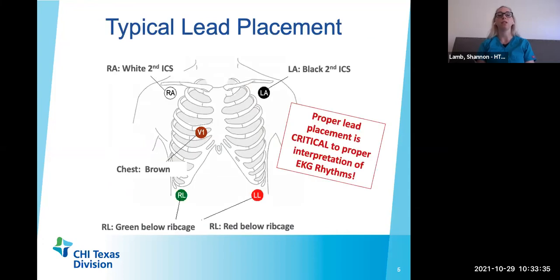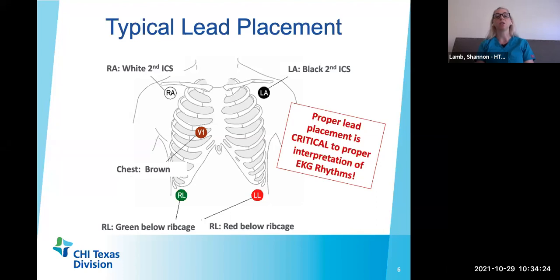There's typical lead placement for our five-lead EKGs. We have five leads: the right arm which is white, the right leg which is green — we say sky over grass. The left arm is black and the left leg is red — we say there's smoke over fire. We also have a V-lead and the V-lead is brown — I like to say that chocolate goes close to your heart. If your patient has not had any type of surgical procedure such as a sternotomy or open heart surgery, we can place the V-lead generally in V-1. If they have had a sternotomy, we wouldn't want to place that lead around their incision because it could cause infection, so we would move that lead into the V-6 position, which is on the left side of the rib cage in the mid-axillary line.